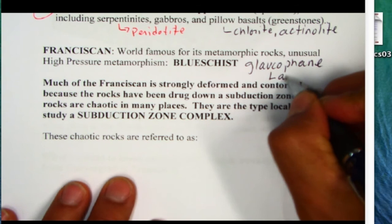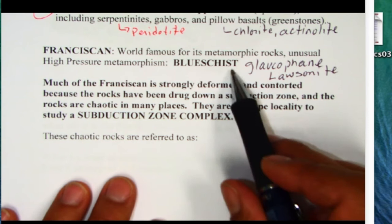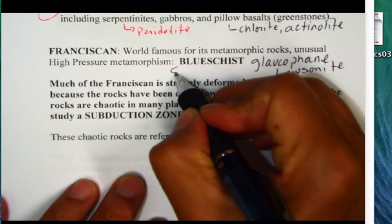Another mineral that forms is lawsonite and lawsonite also forms at very high pressure. So both blue schist rocks have glaucophane and lawsonite.